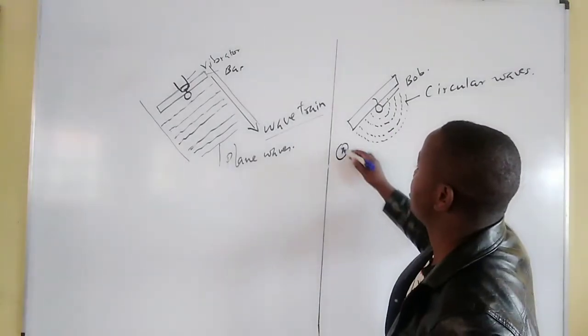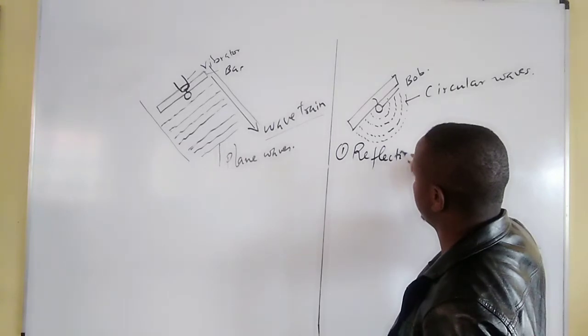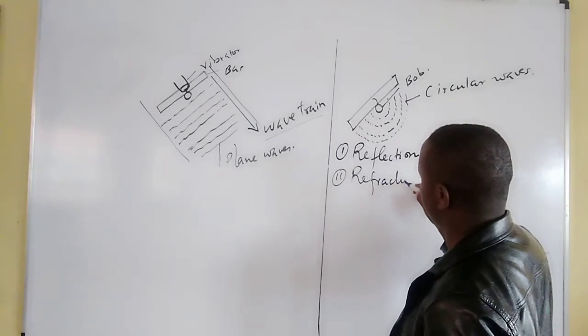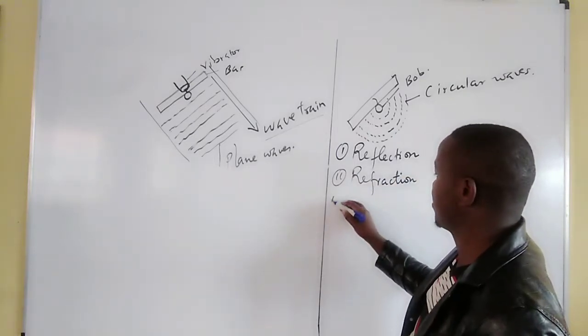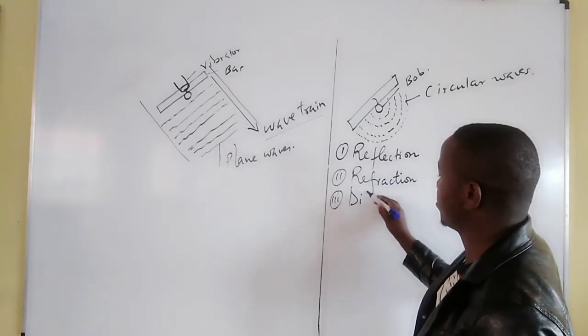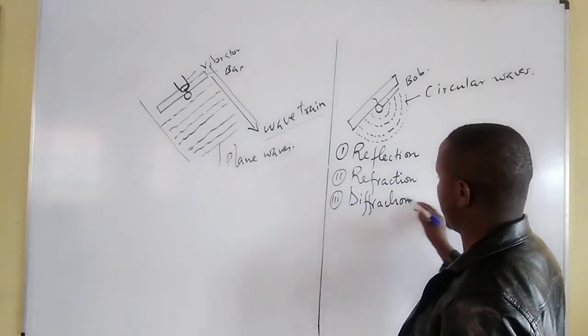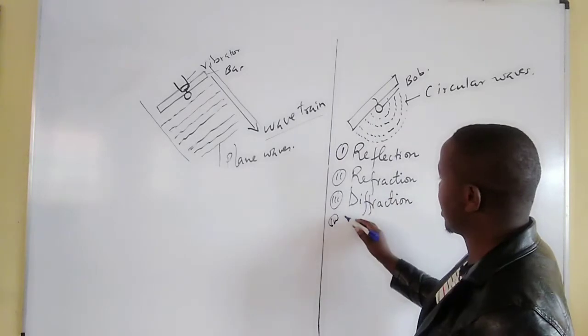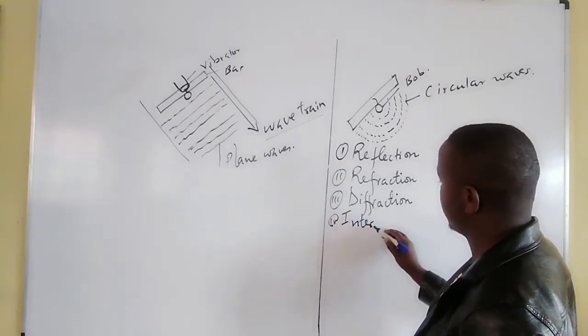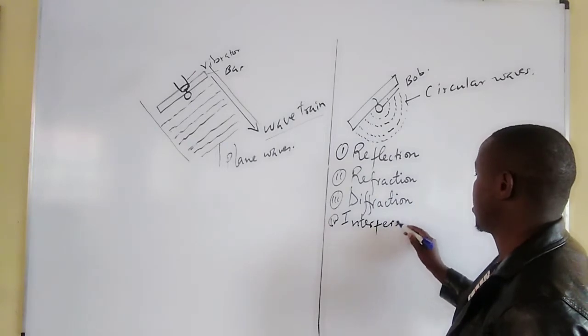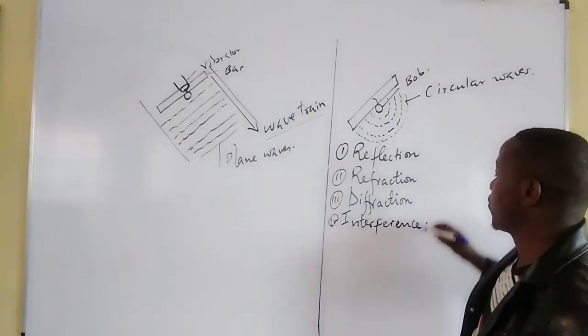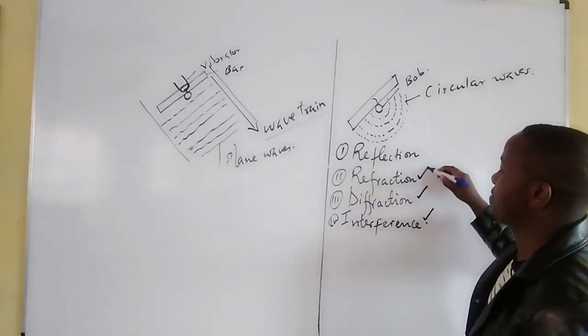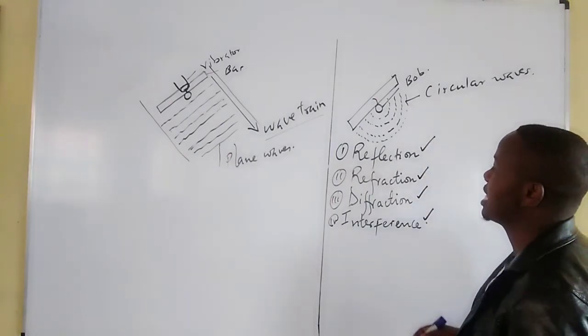The first one is reflection. The second one, refraction. Then we have the third one, diffraction, and finally we will revise what we call interference. Interference of waves. So we will study interference of waves, diffraction of waves, refraction of waves, but we are going to start with what we are calling reflection.